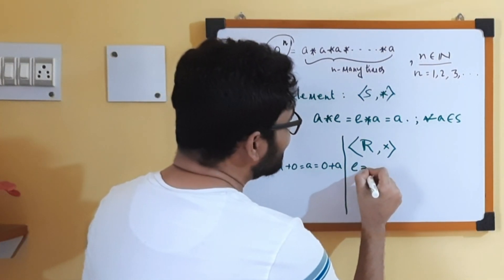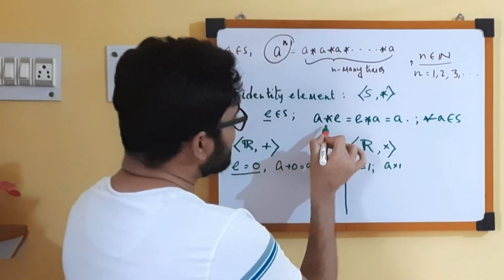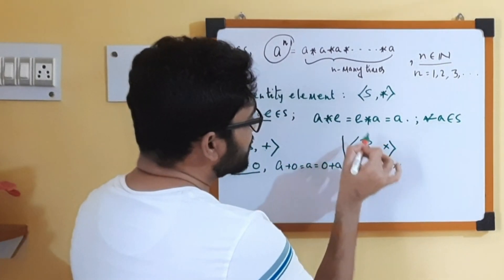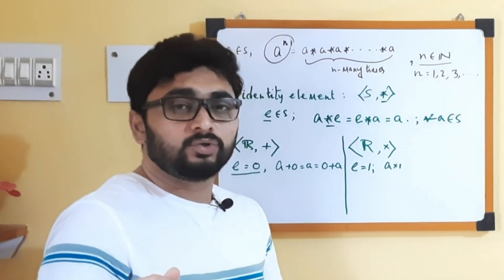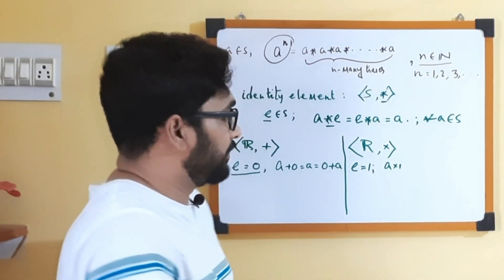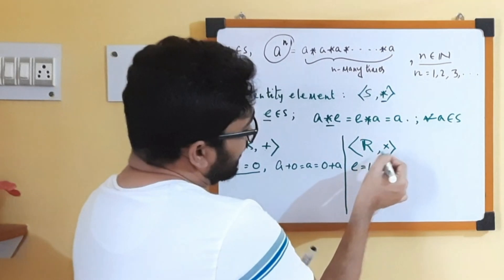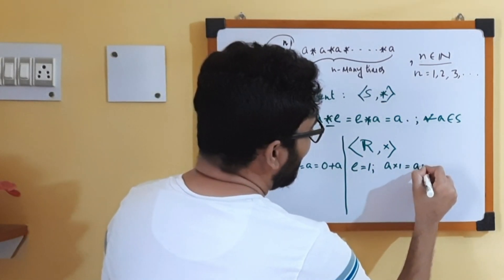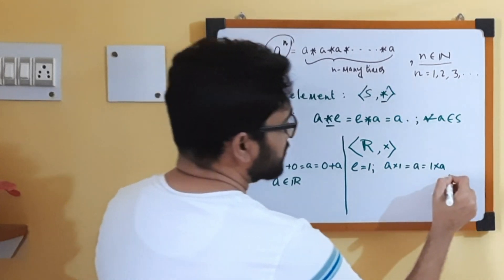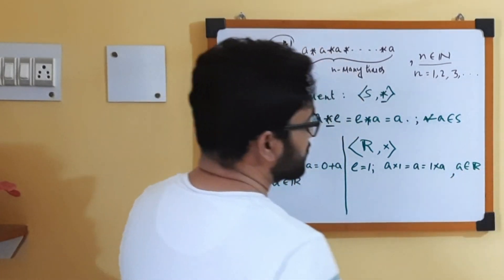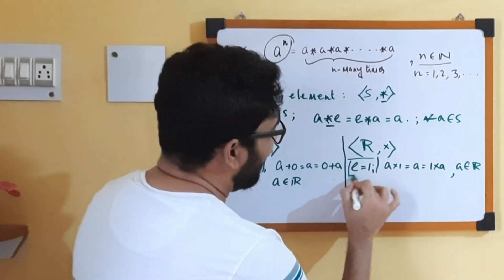If I change the operation to multiplication on the set of real numbers, then clearly the identity element is 1, because A × 1 = A = 1 × A for any A chosen from ℝ. So in case of addition the identity is 0, and in case of multiplication the identity is 1.